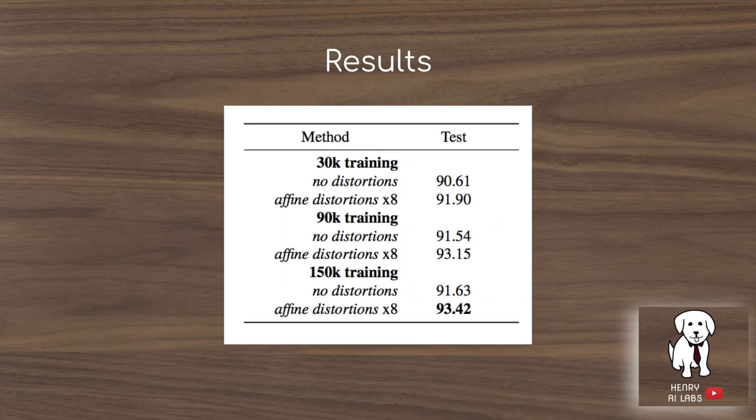These are the results they get with the Siamese network using affine distortions for data augmentation on their dataset. This task is kind of close to solved - they've done a pretty good job with it. But it's only 105 by 105 grayscale images, so there's not that much complexity to the dataset.